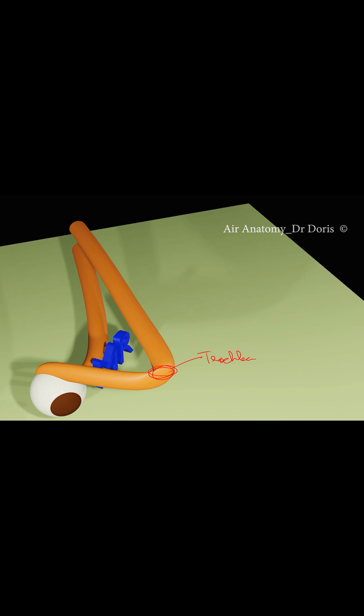And so the line of pull of the superior oblique will be like this, though the muscle is pulling like this. So that will be the difference of how the superior oblique contracts.